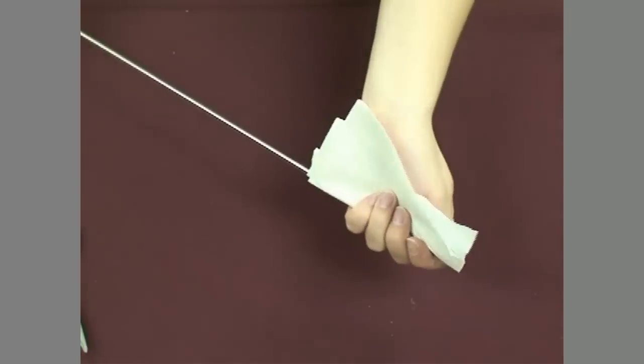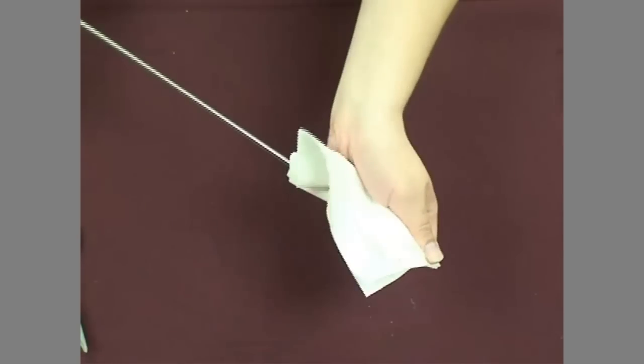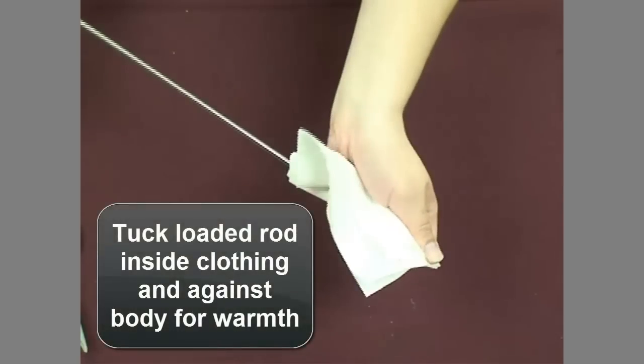Lastly, wrap the loaded end of the insemination rod with a paper towel and tuck it inside the inseminator's clothing for insulation and added warmth. Never place the AI rod in the mouth or carry it uncovered.